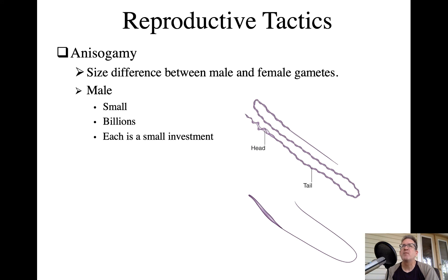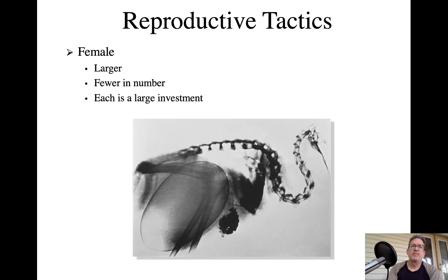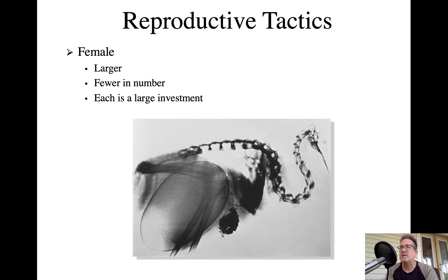Females produce very large gametes, and each one represents a very large investment. In contrast to males, females don't want to mate with just any male — they want to make sure that those few eggs they have are being fertilized by the highest quality male in the population.